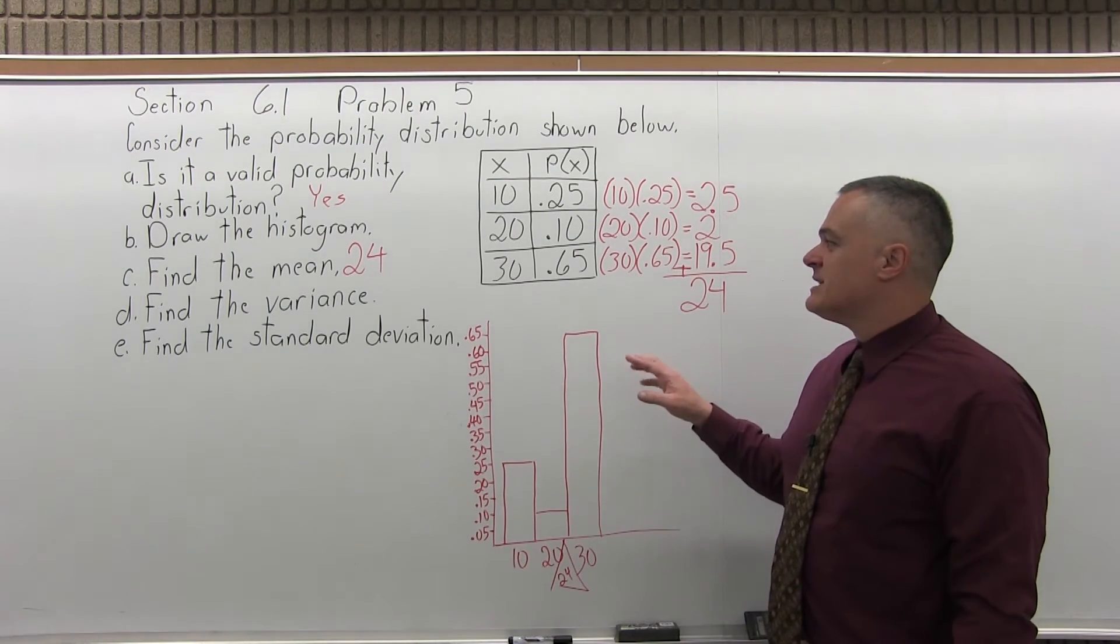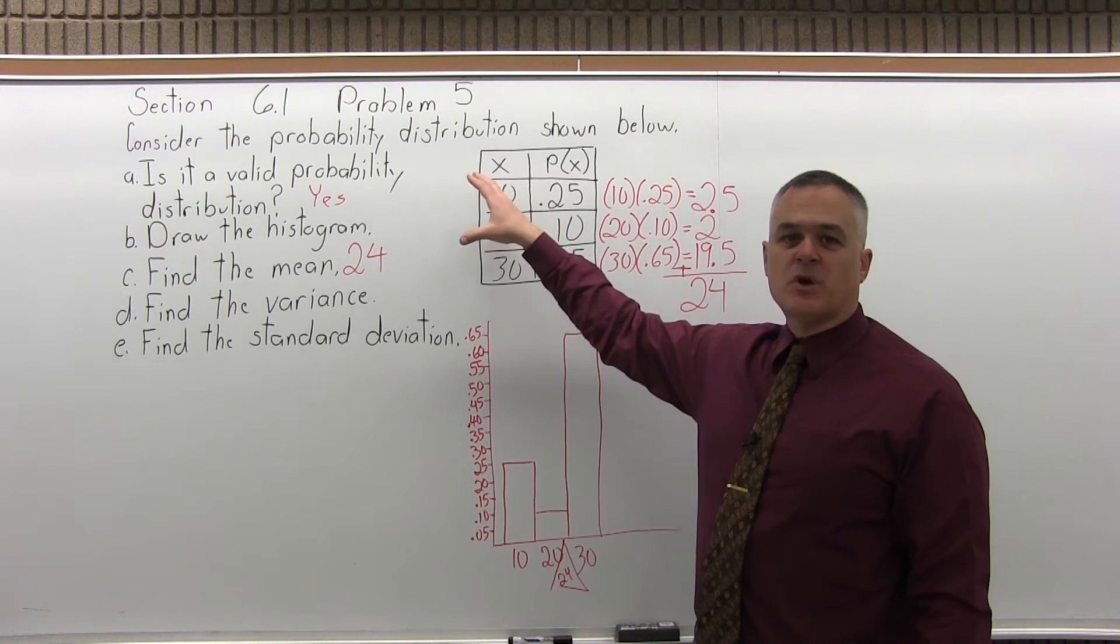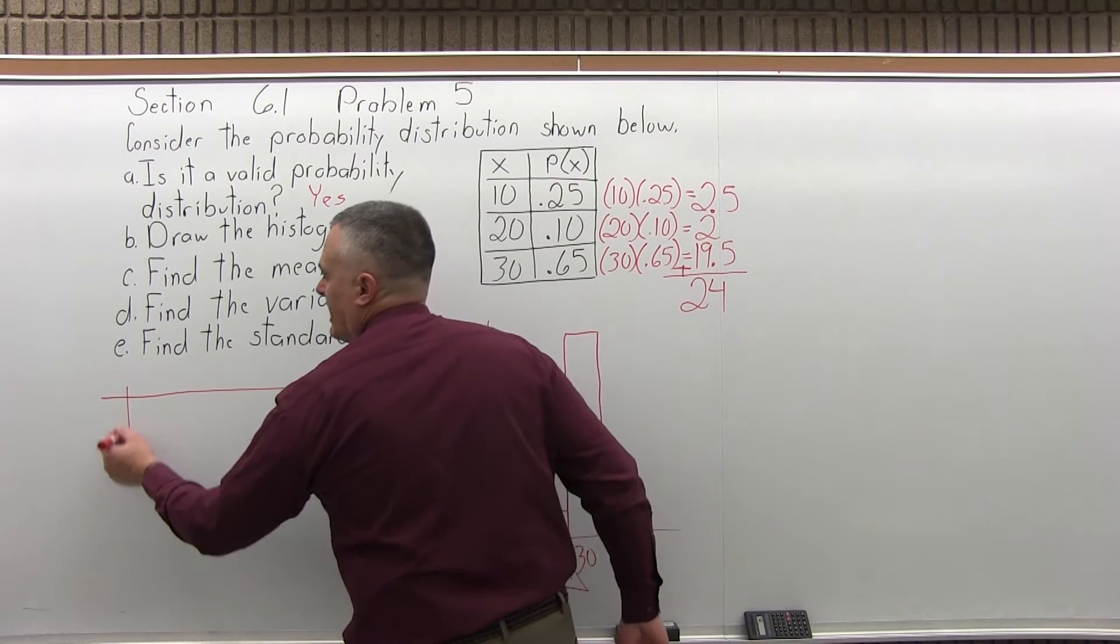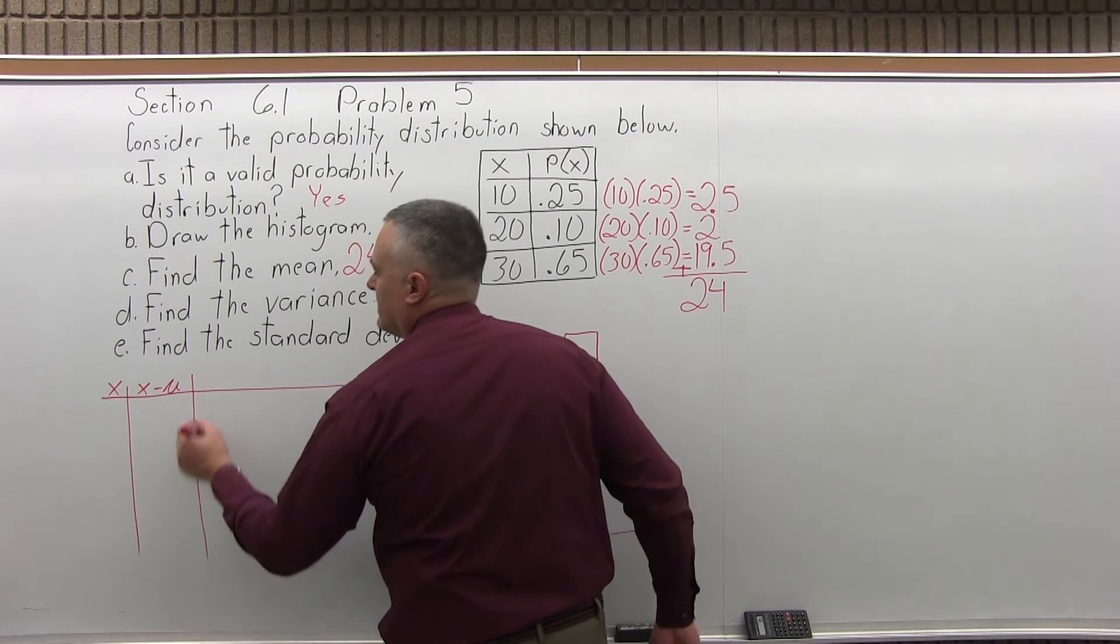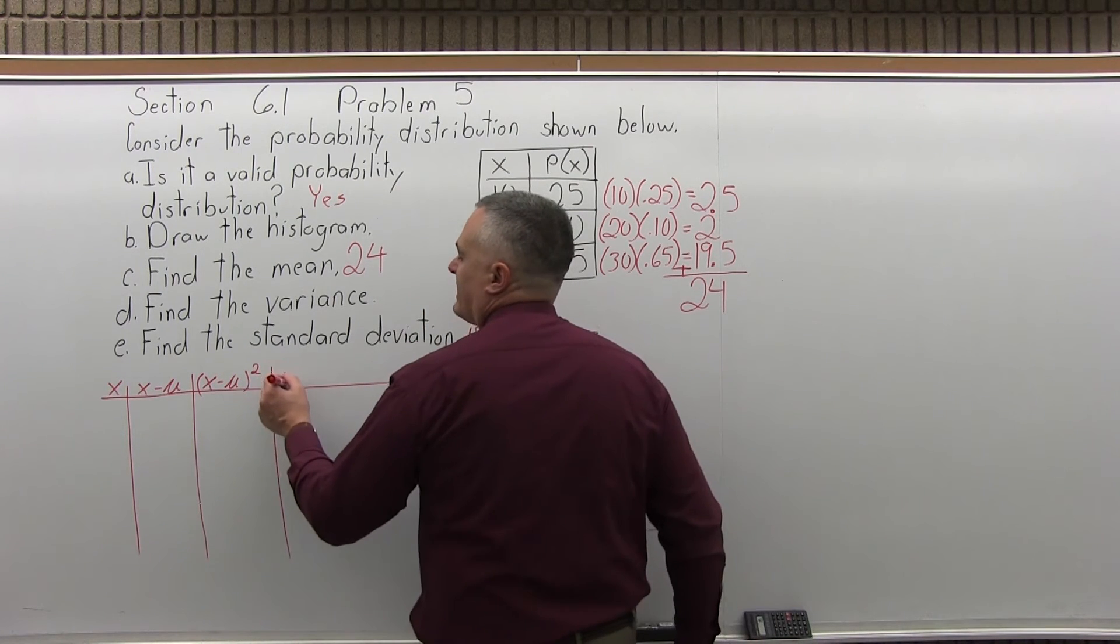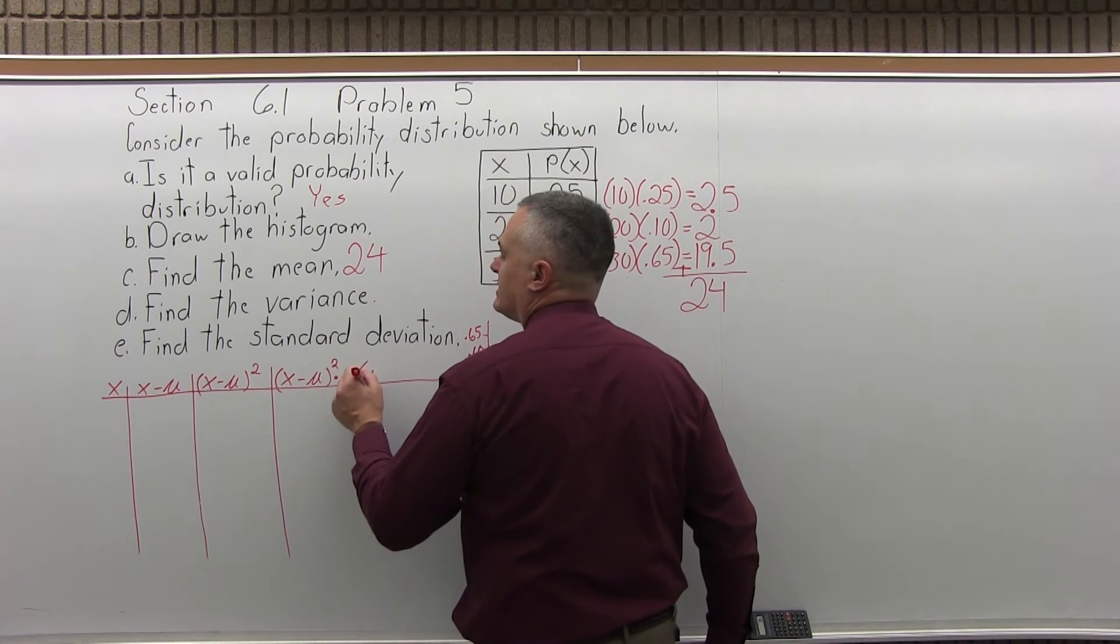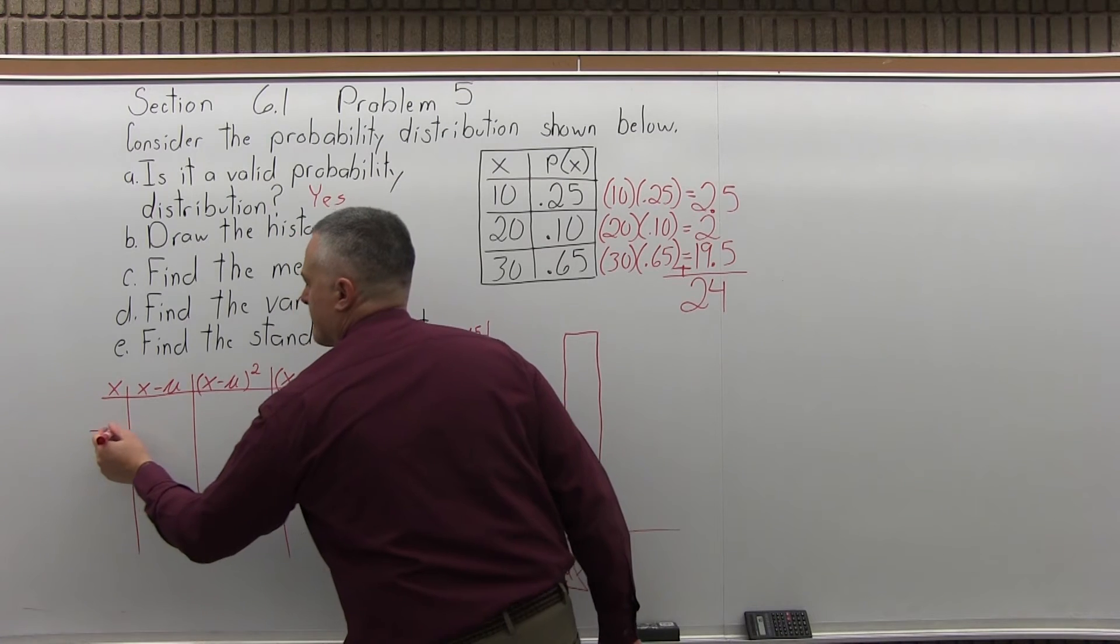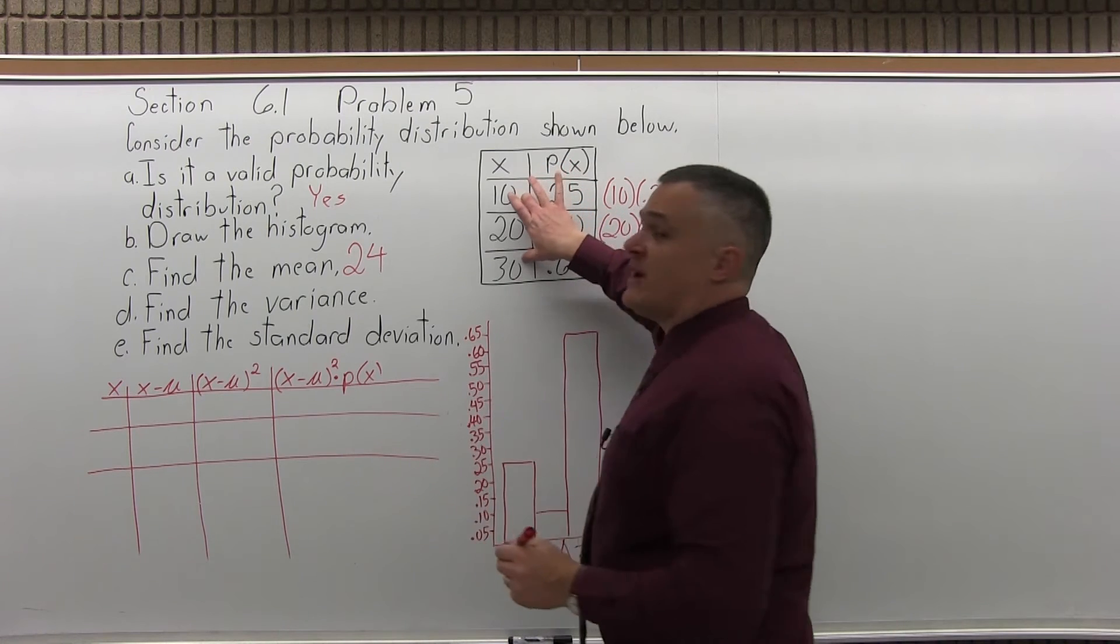The variance now is going to come from filling out a chart. And the variance is a measure of how spread out the results of your experiment are from one trial to the next. So my chart will have a column for x, the column for x minus the mean. The symbol for that is mu. Then x minus the mean in parentheses raised to the second power. And then finally x minus the mean in parentheses to the second power times probability of x. And the probability of x will be these values that are given in the original question.